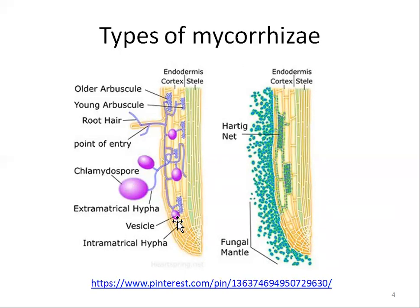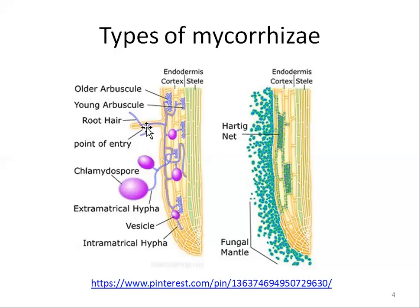These are the vesicles and arbuscules present inside the host cell. Hyphae present inside the cells are called intramatrical hyphae, while hyphae present outside the cell are known as extramatrical hyphae or extramatrical mycelium. There are young and older arbuscules visible here, along with the point of entry of the fungal partner into the host root. The chlamydospores are the perennating structures that help the fungus survive in unfavorable conditions.